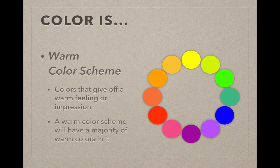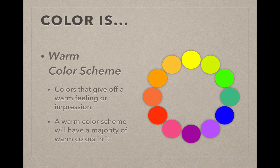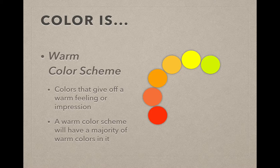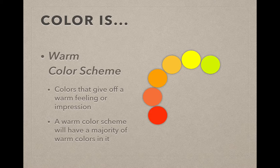A warm color scheme uses half of the color wheel. And in this case on my color wheel here, it's going to be the top half. These are colors that give off a warm impression. And we'll have a majority of warm colors in it. It may end up having some cool colors, but it will mostly have these warm colors. And it gives you the idea of being someplace warm. It's an easy way to think about it.